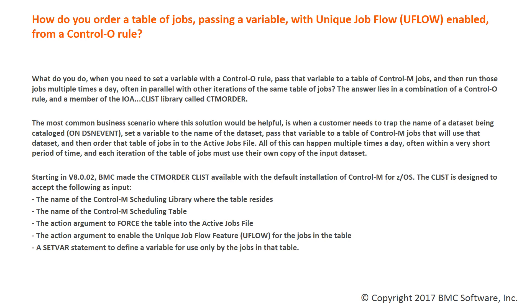Starting in version V8.0.02, BMC made the CTM Order CLIST available with the default installation of Control-M for ZOS. The CLIST is designed to accept the following as input: the name of the Control-M scheduling library where the table resides, the name of the Control-M scheduling table, the action argument to force the table into the active jobs file, the action argument to enable the unique job flow feature, or uFlow, for the jobs in the table, and the set var statement to define a variable for use only by the jobs in that table.